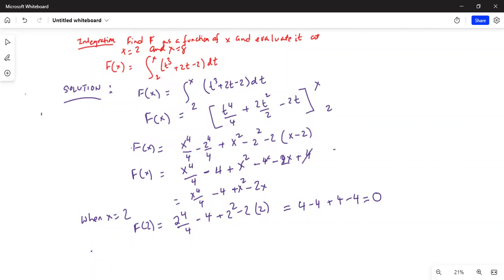The other one we have been asked to find out is when x is equal to 5. So f of 5 is equal to 5 to the power of 4 divided by 4 minus 4 plus 5 square minus 2 times 5.